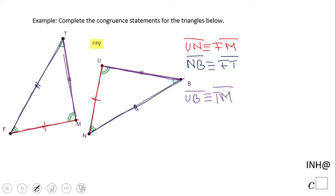And also then we notice angles. We notice that angle B and T are congruent. Why? Because they have one mark. Then we have what else. Angle M and U. I'm going to start with U, U and M.